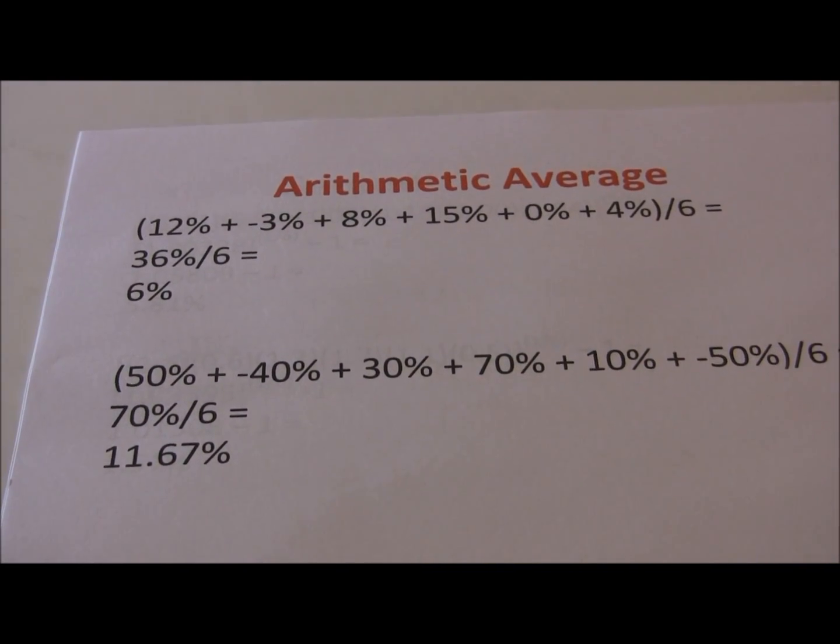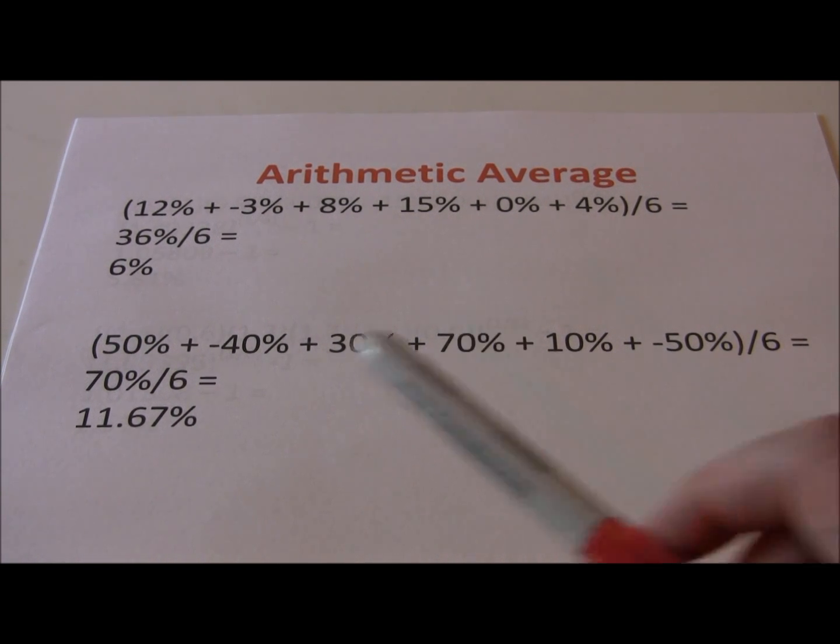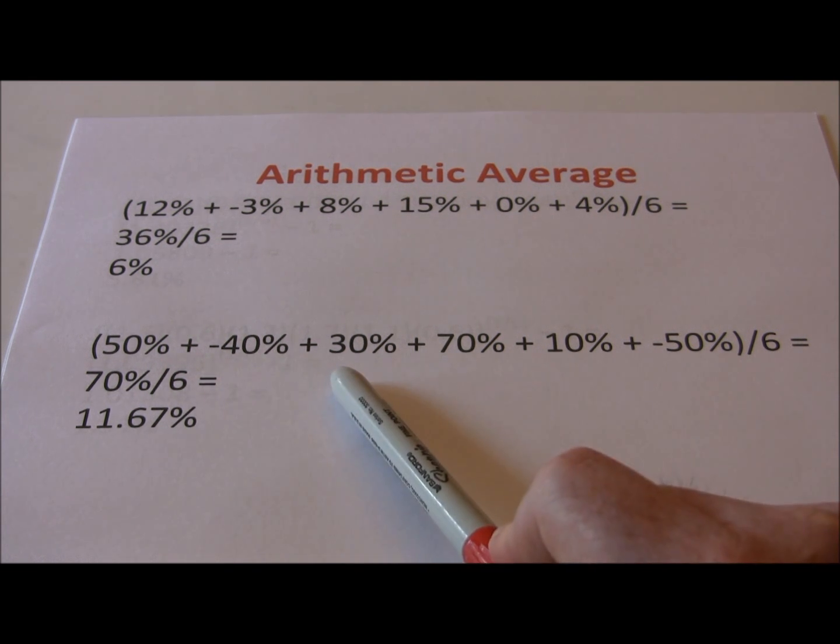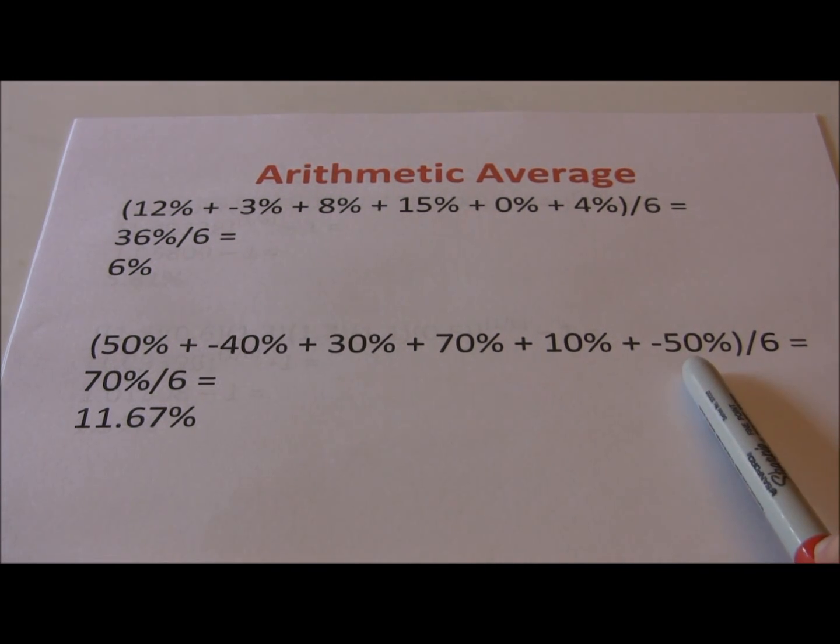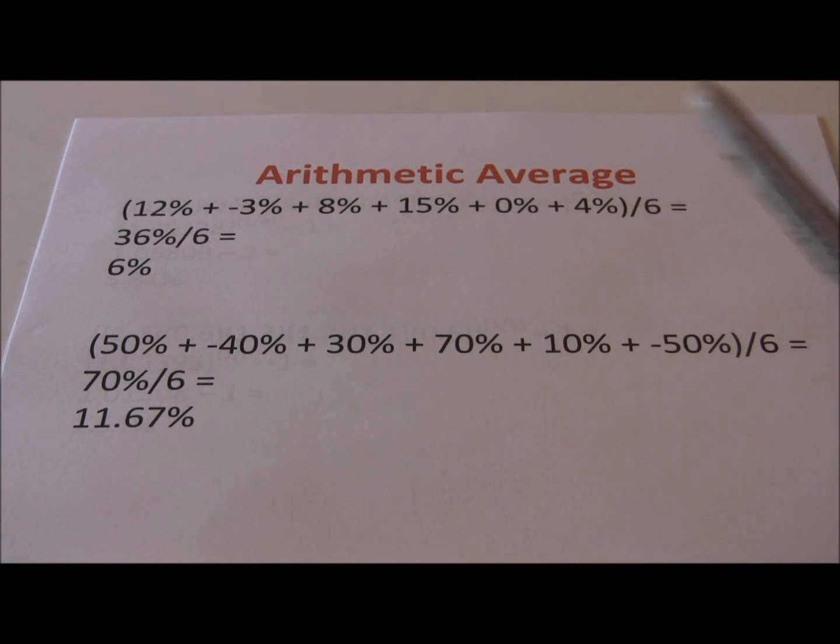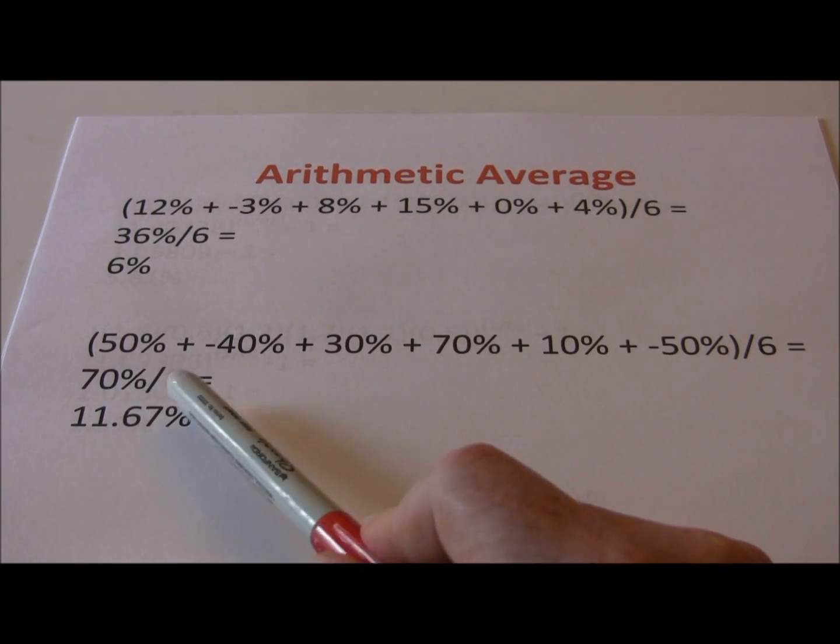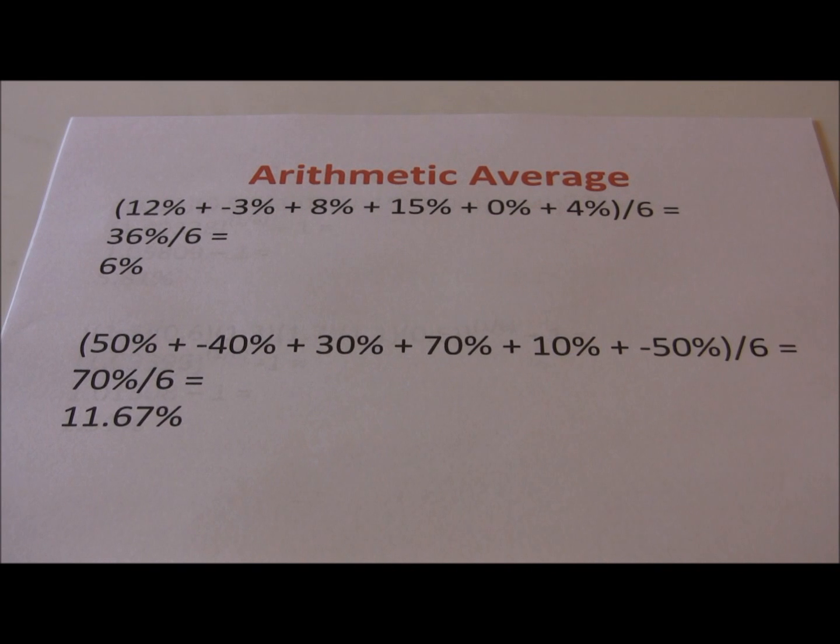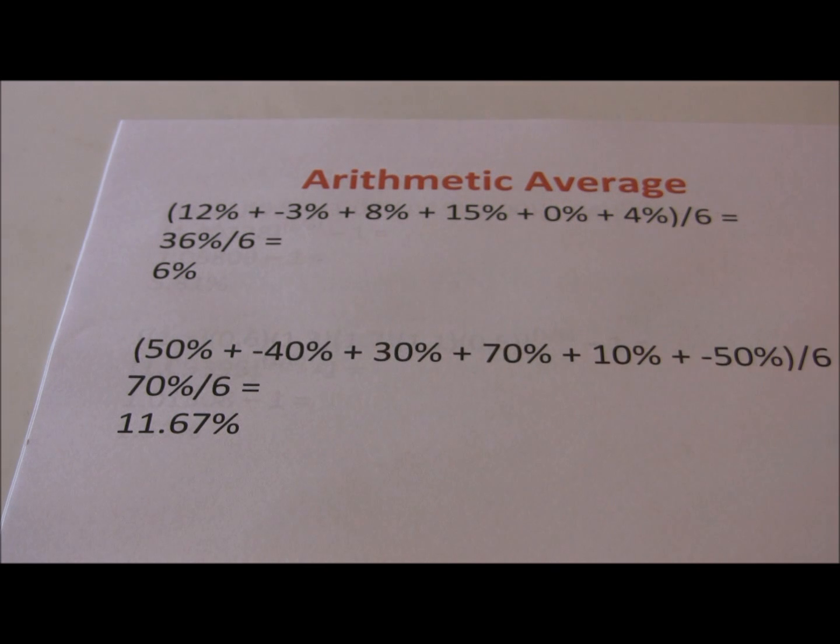Do the same thing for investment B. We start out with 50%, subtract off our 40%, add in 30%, add in 70%, add in 10%, subtract off our 50% year six return. There were six periods here, so we divide by six. Our total return is 70%, divide by six, gives us 11.67%. So it appears when we look at these two investments that investment B offers a substantially higher return than investment A.